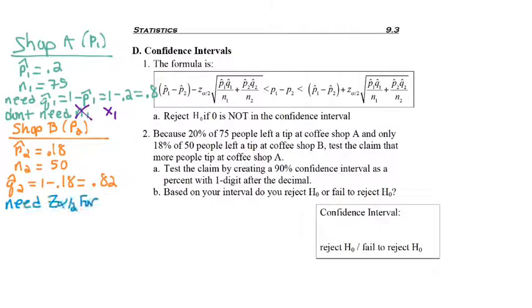And lastly, we'll need z-alpha over 2 for the 90% confidence interval. You've either memorized it, or you're using the bottom right corner of the z-table, but z-alpha over 2 is 1.645.